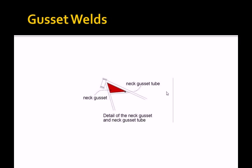The neck gusset is usually welded to everything in sight, the backbone, neck stem, neck gusset tube, and the bottom rails.